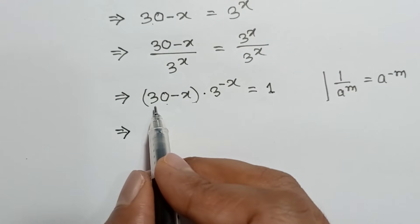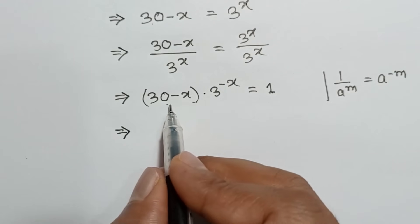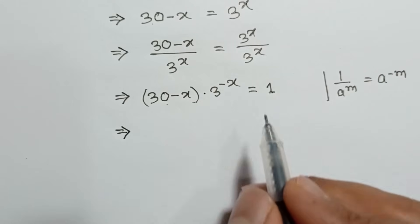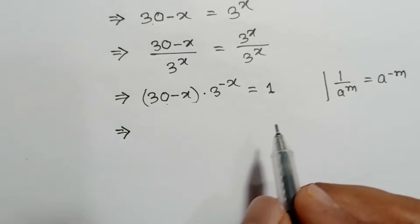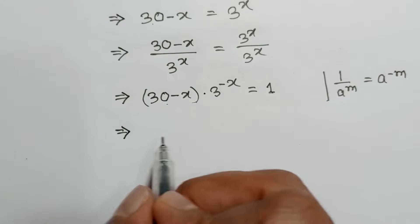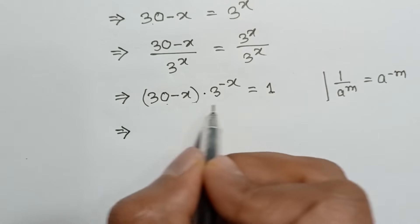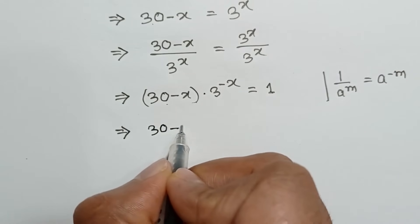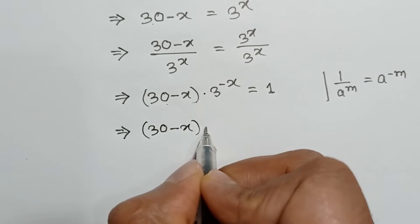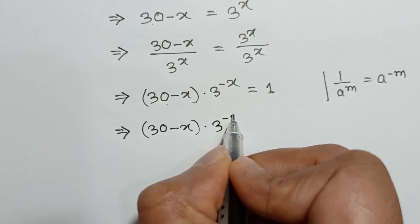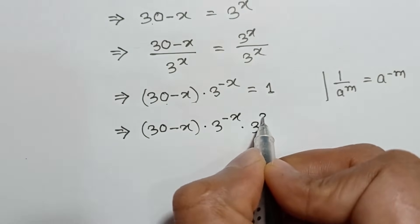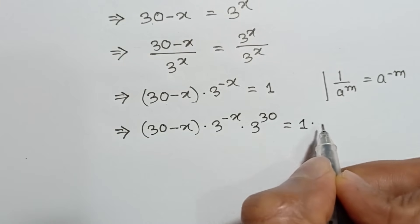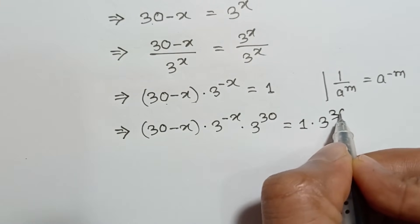If we try to make the coefficient and the exponent equal, we will have to multiply both sides by 3 to the power 30. So, multiplying both sides by 3 to the power 30, we will get 30 minus x times 3 to the power negative x times 3 to the power 30 is equal to 1 times 3 to the power 30.